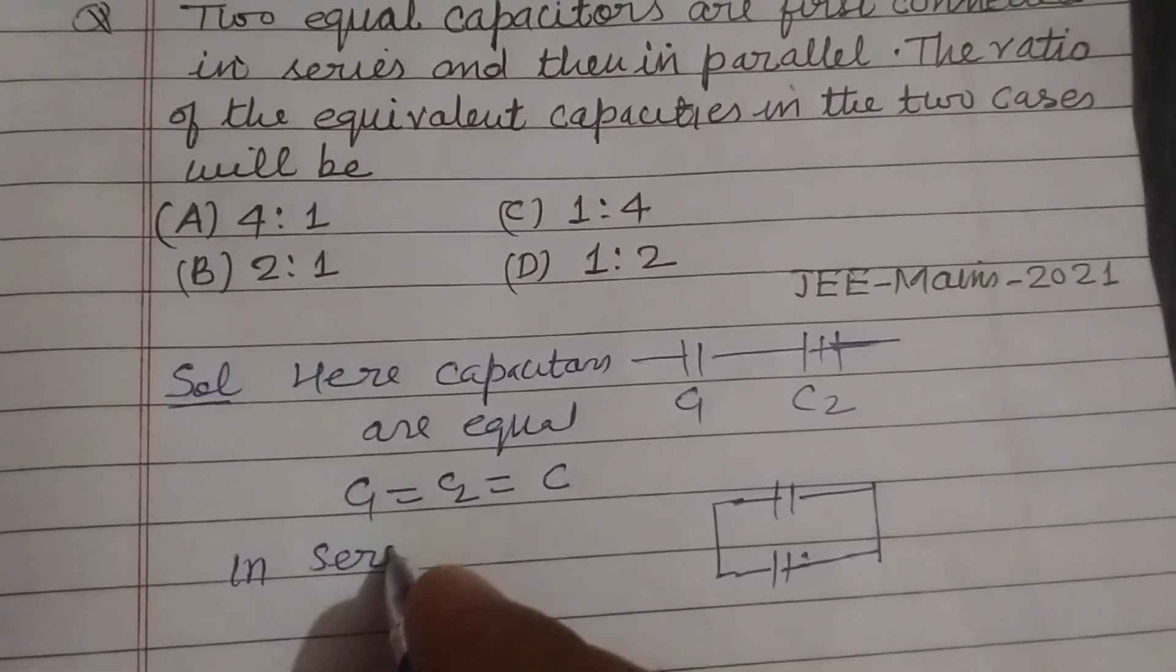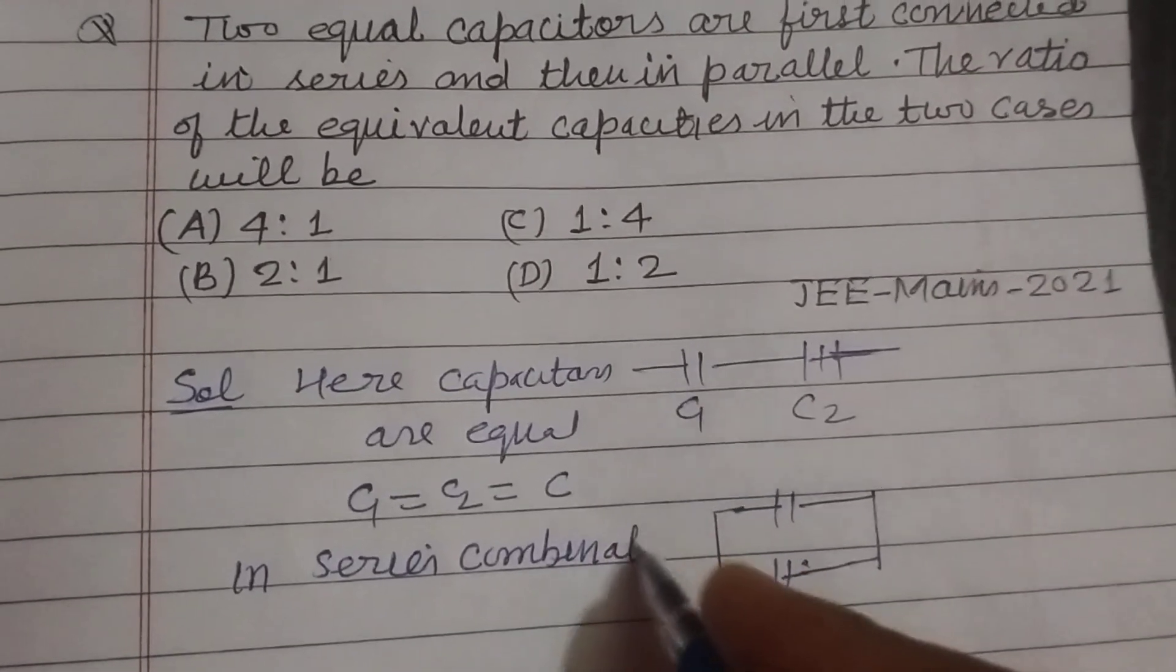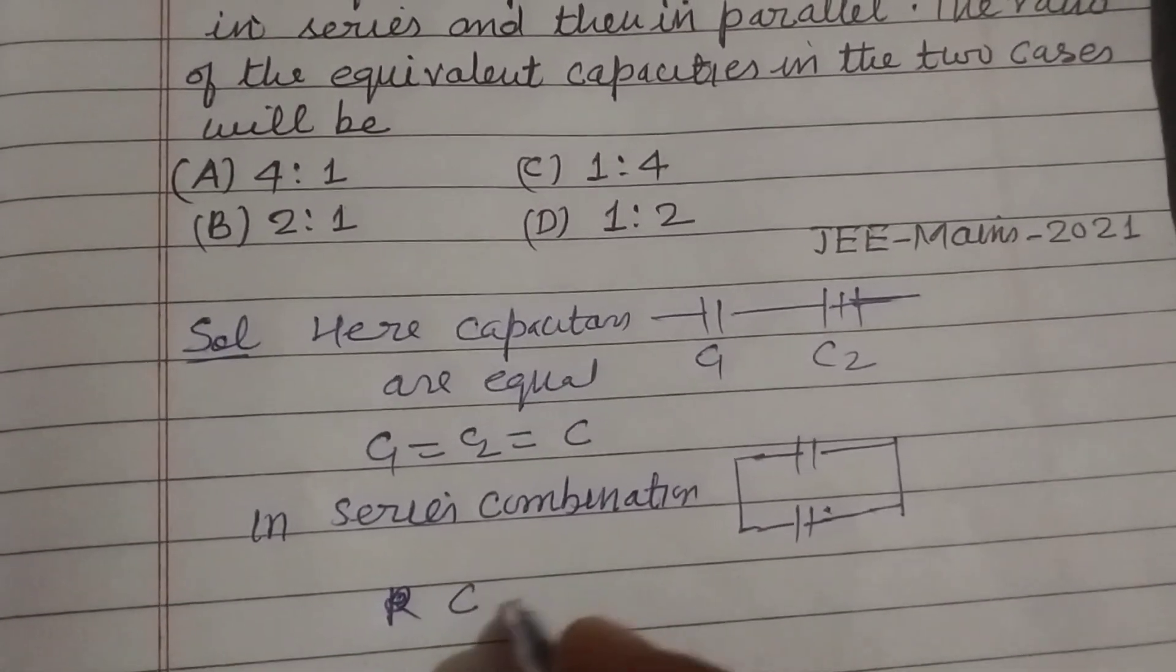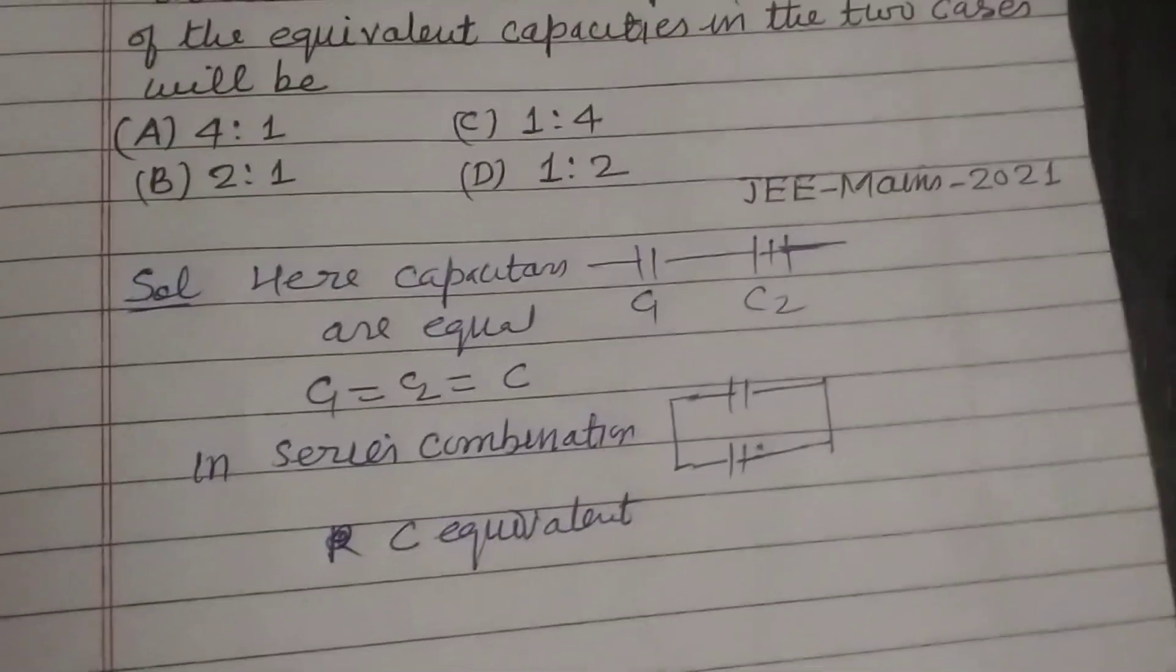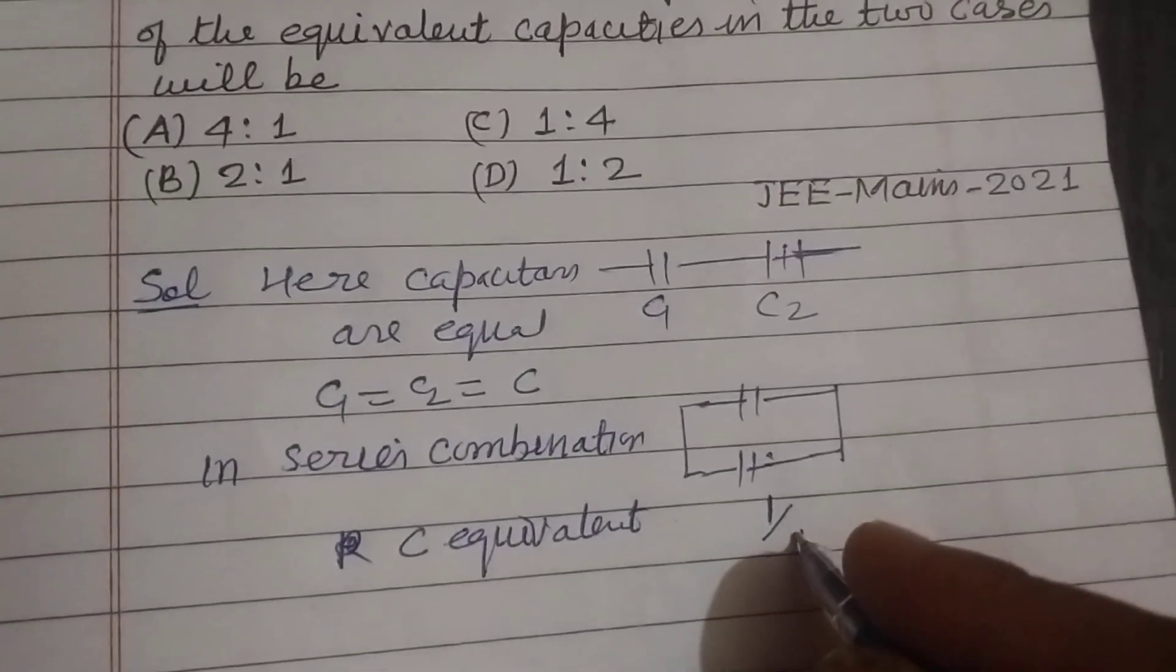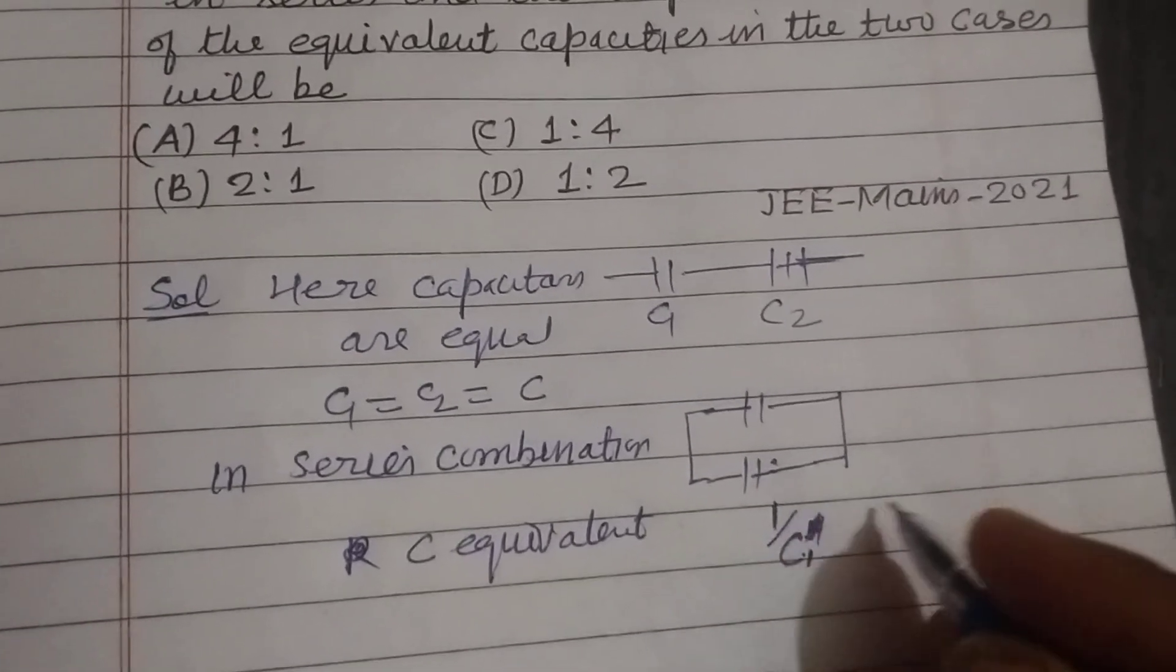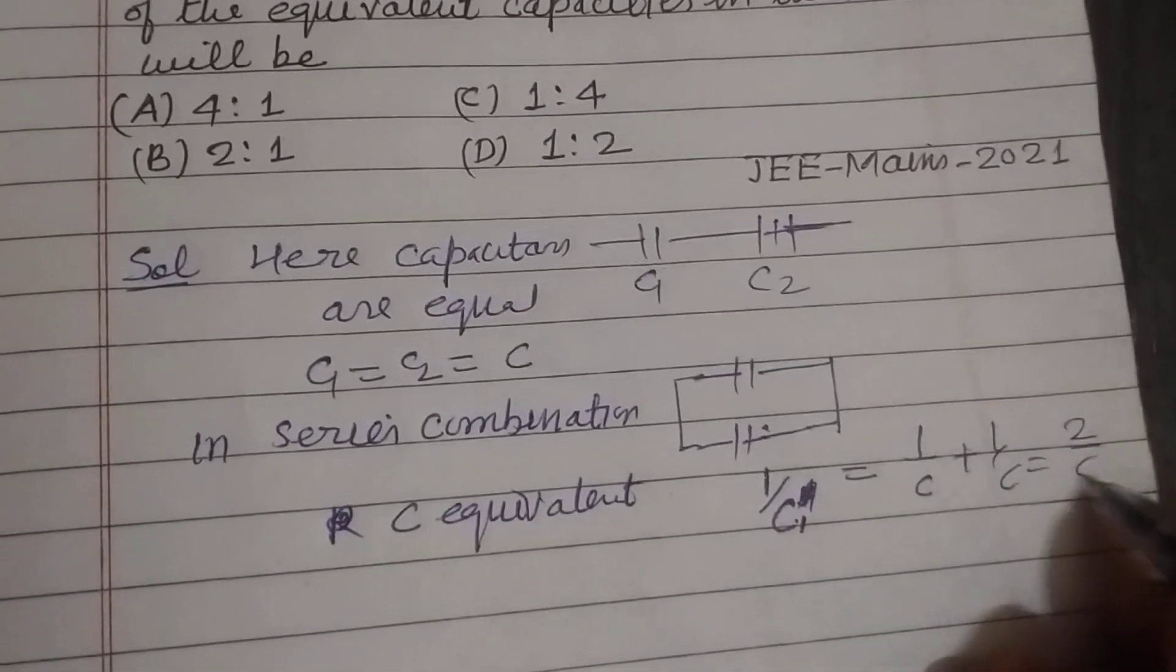This is 1 upon C dash, so 1 upon C plus 1 upon C, this is 2 upon C. So C dash equals C by 2.